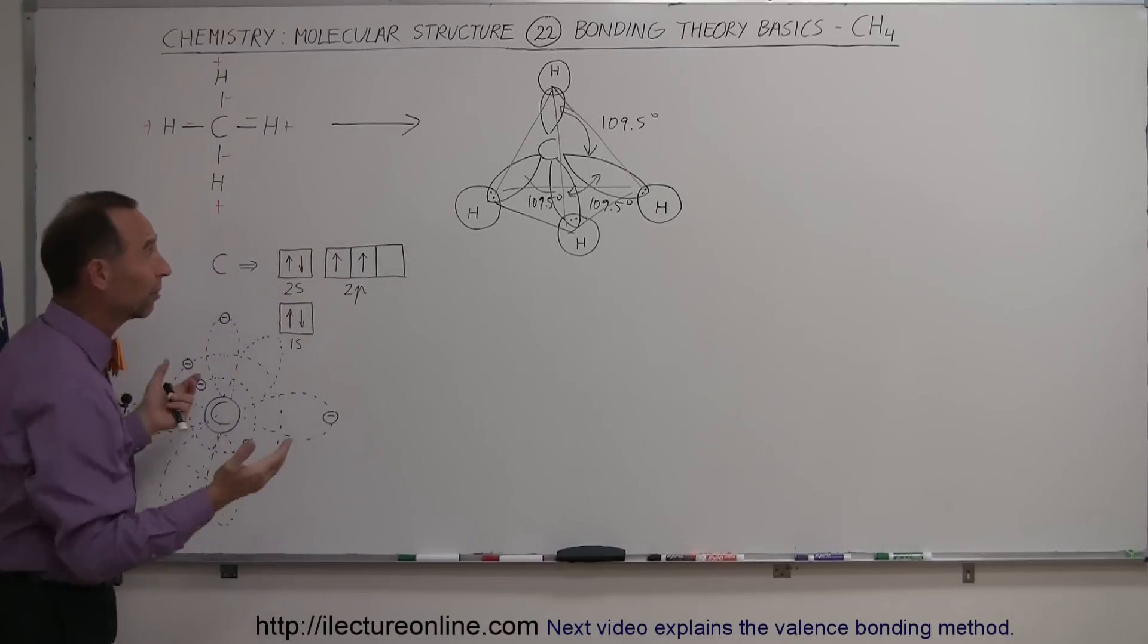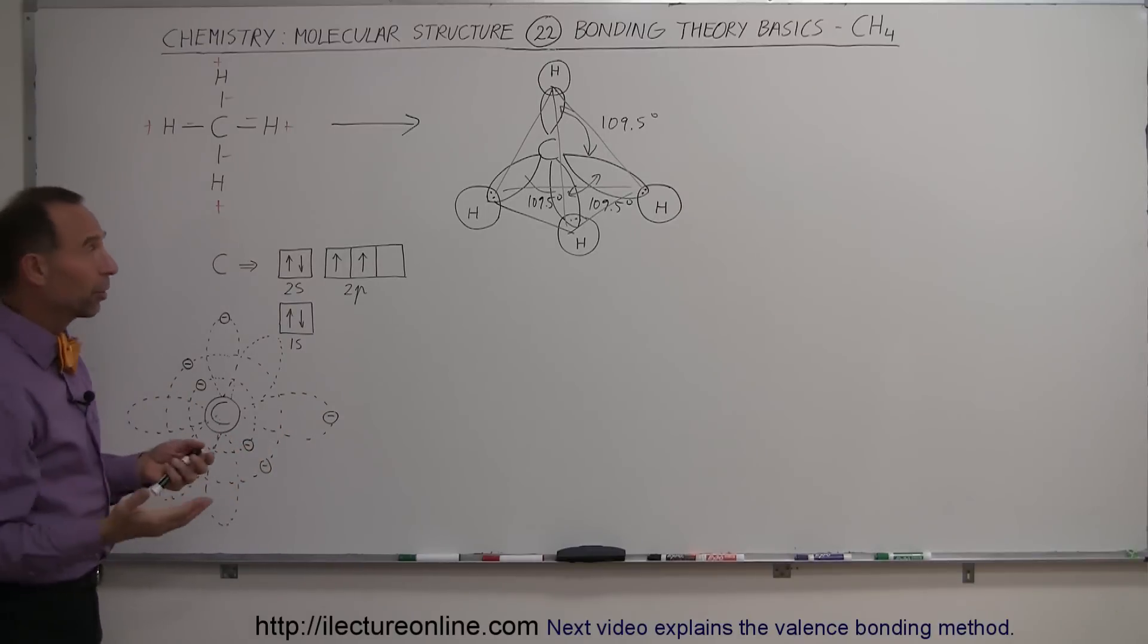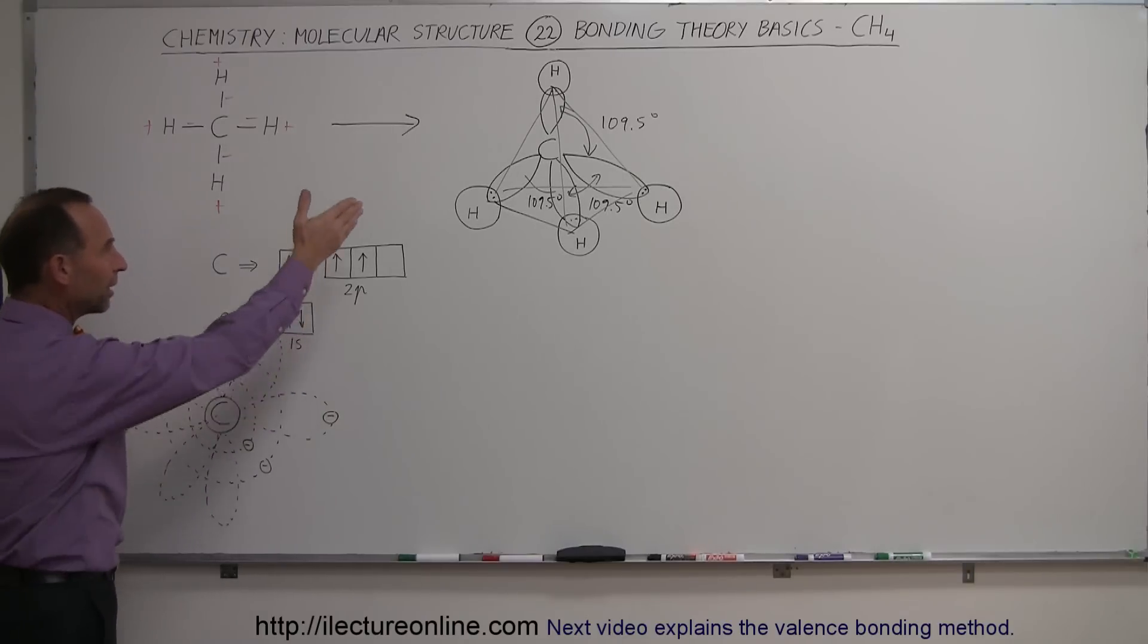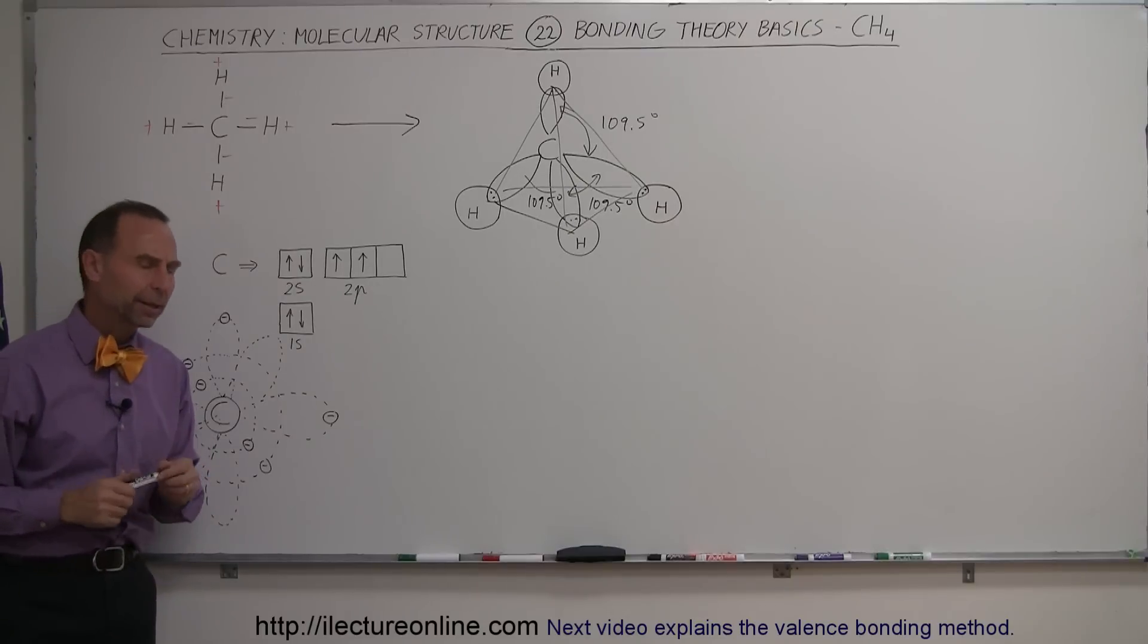But we know that's not the case because carbon forms a molecule with four hydrogens. So somehow, something happens to these orbitals and these orbital shapes so that all four of these electrons can be used in the bonding to end up with a tetrahedral shape like that.